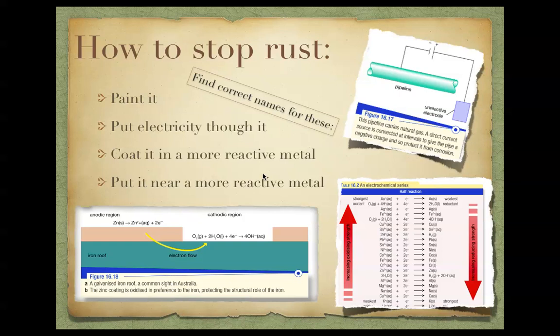What they do to stop these corroding and falling into the ocean is they might put a whole bunch of zinc next to where their supports are. And what will happen is the zinc will oxidise before the iron. Anything that's more reactive than iron can be used for sacrificial protection.